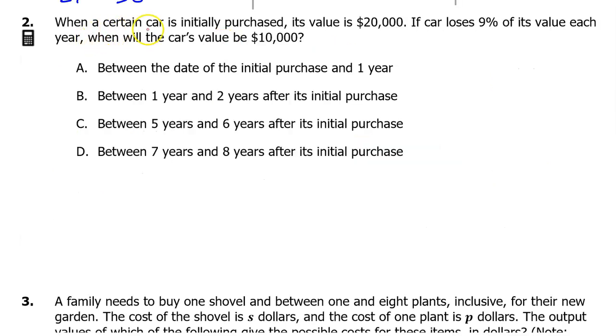Number 2. When a certain car is initially purchased, its value is $20,000. If a car loses 9% of its value each year, when will the car's value be $10,000? The value of this car over time can be modeled by an exponential decay function. An exponential growth or decay function can be modeled by f(t) equals a_0 times r to the t power, where a_0 is the initial amount or the initial value, and r is the growth factor.